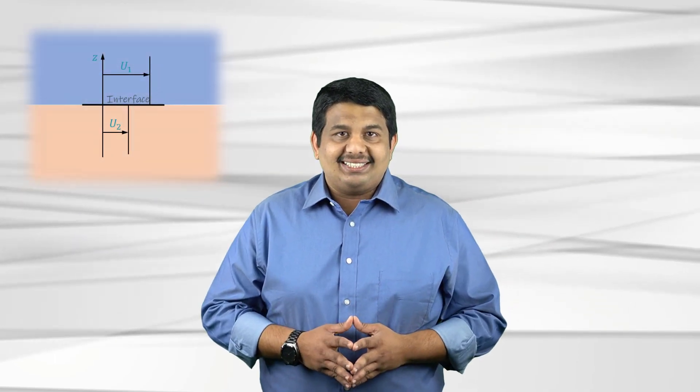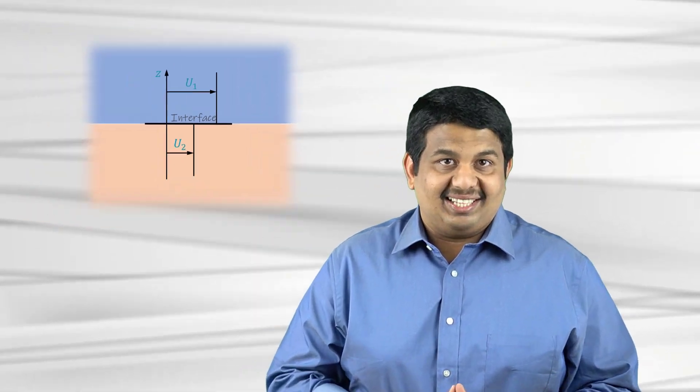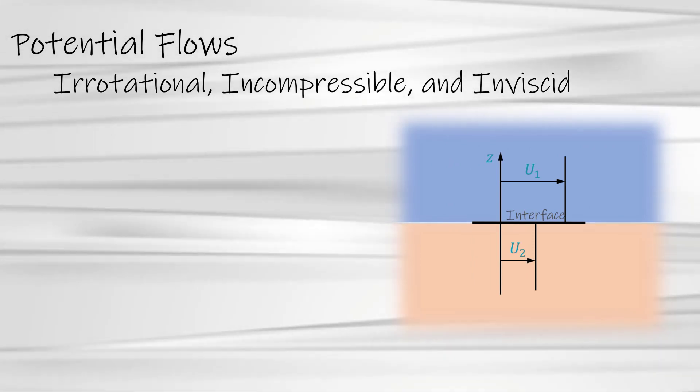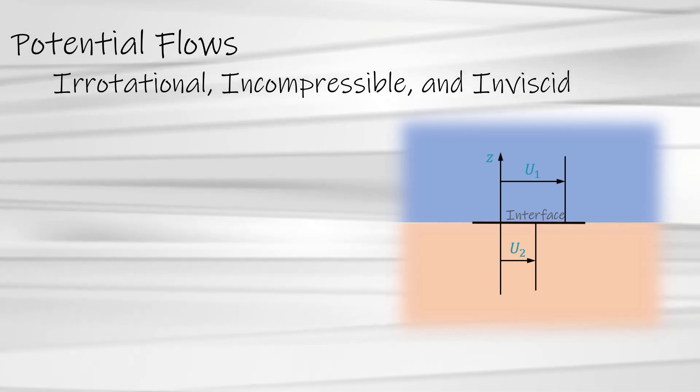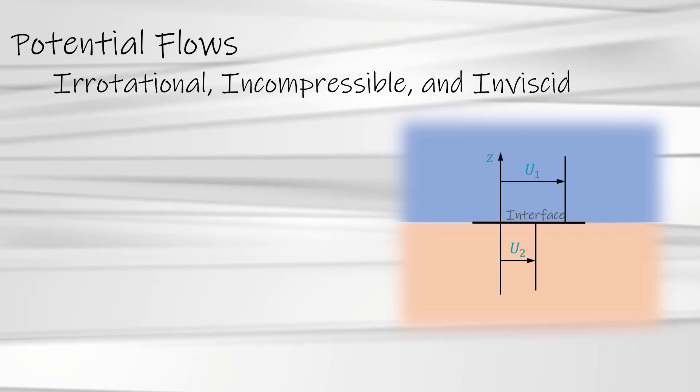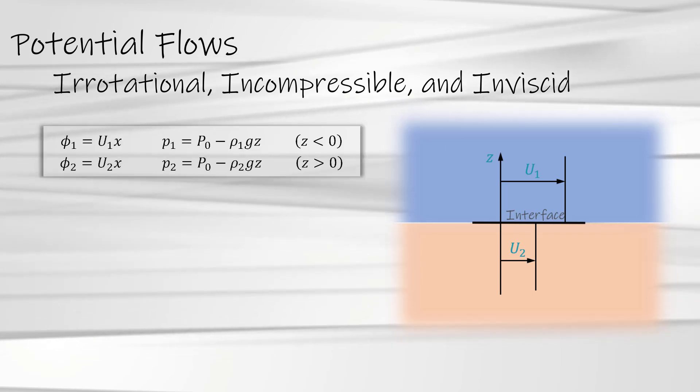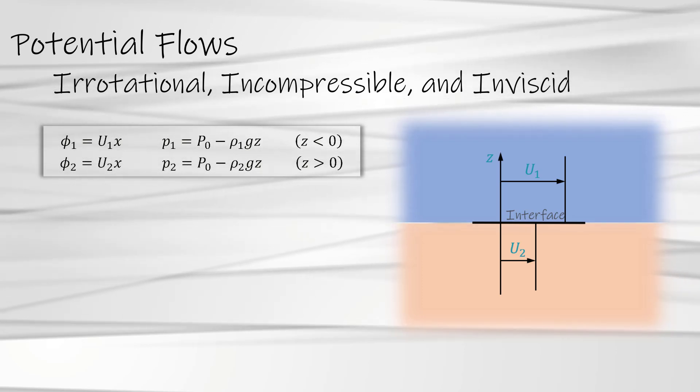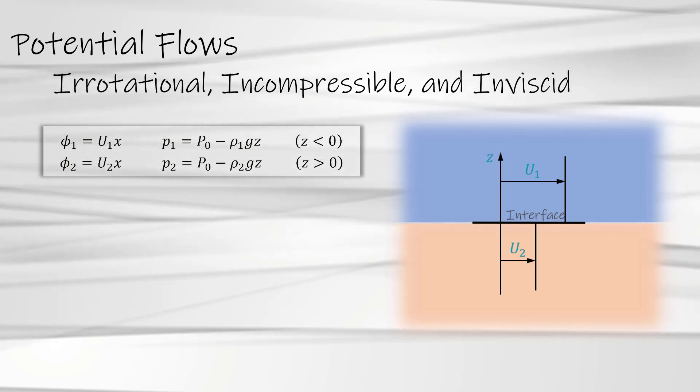Let us consider two flows of different velocities and densities, separated by a horizontal interface. The flows are assumed to be potential, i.e. irrotational, incompressible and inviscid. For such flows, the velocity potential and hydrostatic pressure distribution is given by the following equations. Since the flows are potential, they satisfy the Laplace equation.